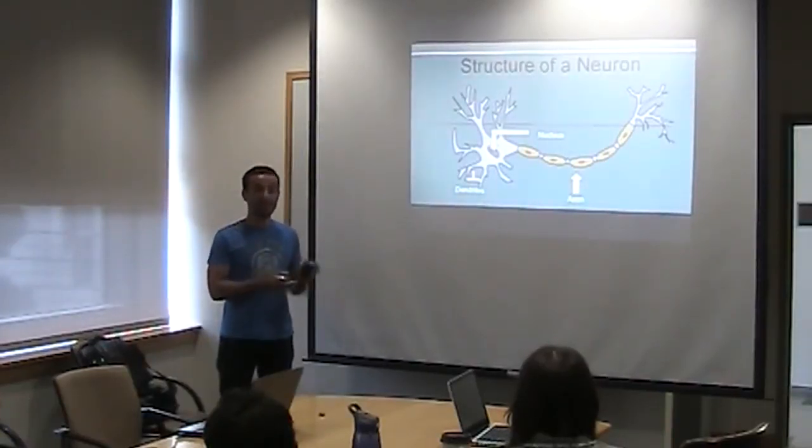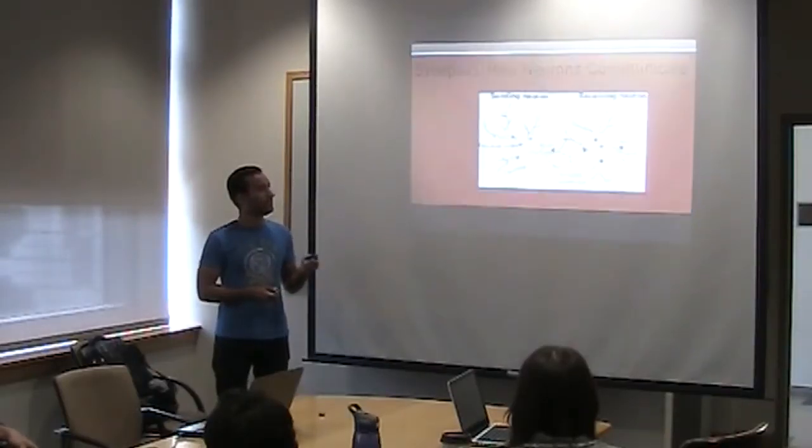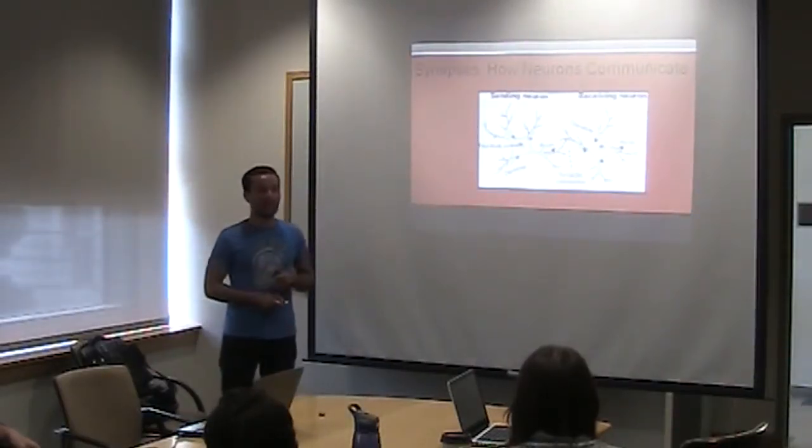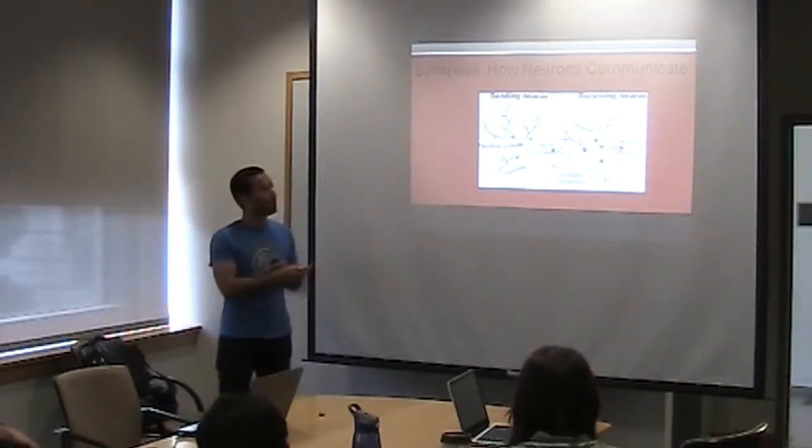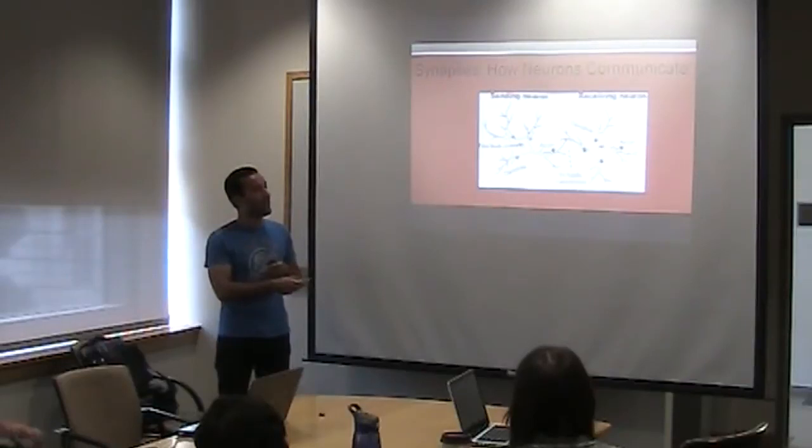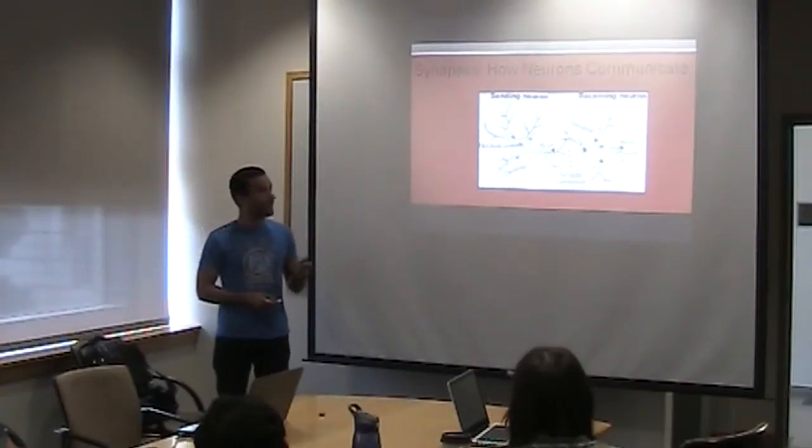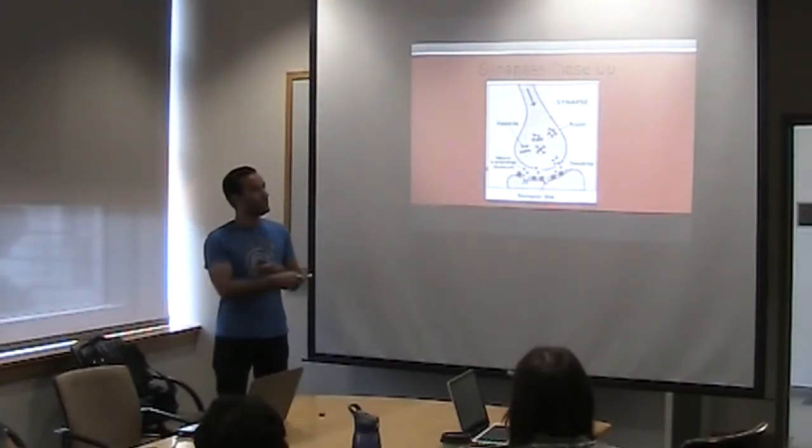Like I mentioned, synapses are how neurons communicate. As you can see here, we have one neuron - the sending neuron - and the receiving neuron over here. If you look closely, it looks like they're almost touching each other, but in reality they're not. If we take a closer look, we see there's this tiny gap right here where the synapses form.